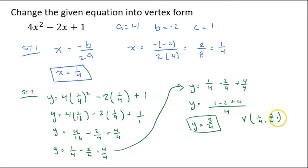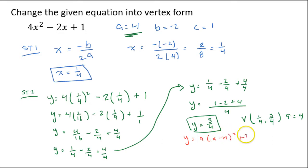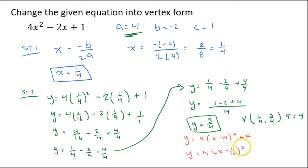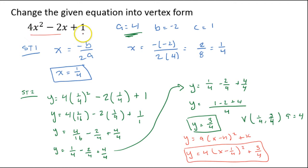Since we know a = 4, we use the vertex form equation: y = a(x - h)² + k. Our h value is 1/4, our k value is 3/4, and a is 4. So we get y = 4(x - 1/4)² + 3/4. This is our vertex form. If we graph both the standard form and this vertex form, we'll see they represent the exact same parabola.